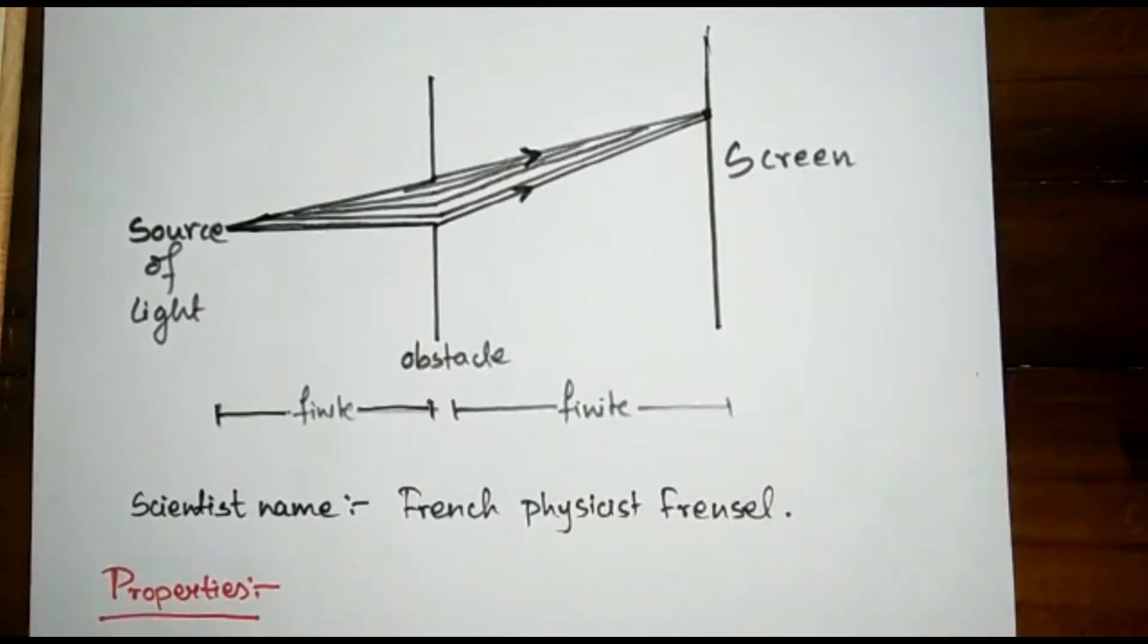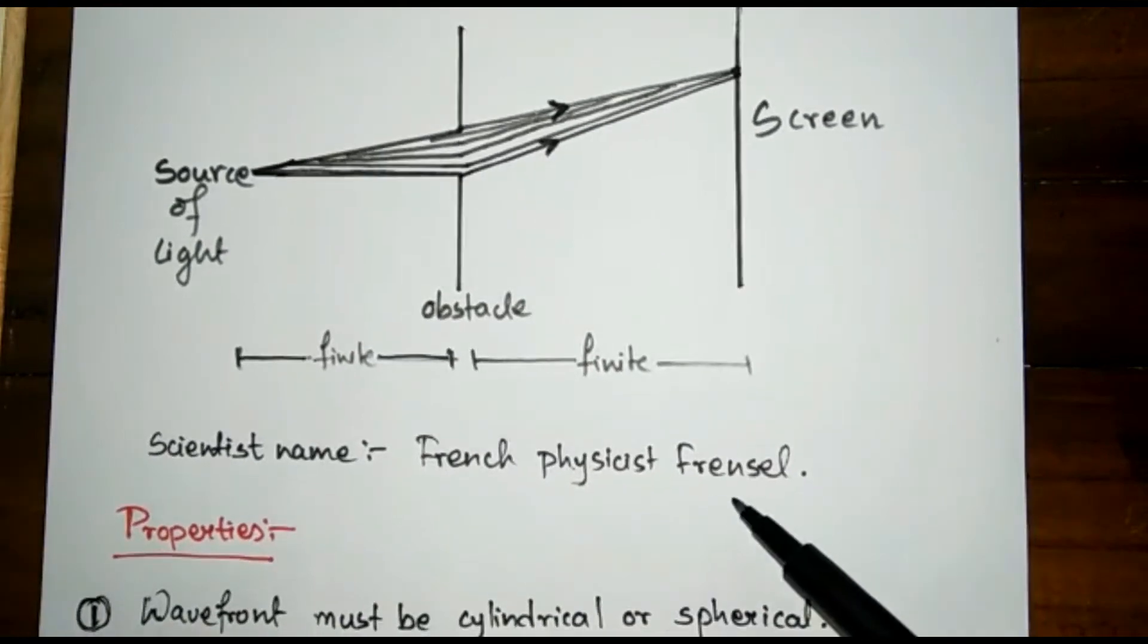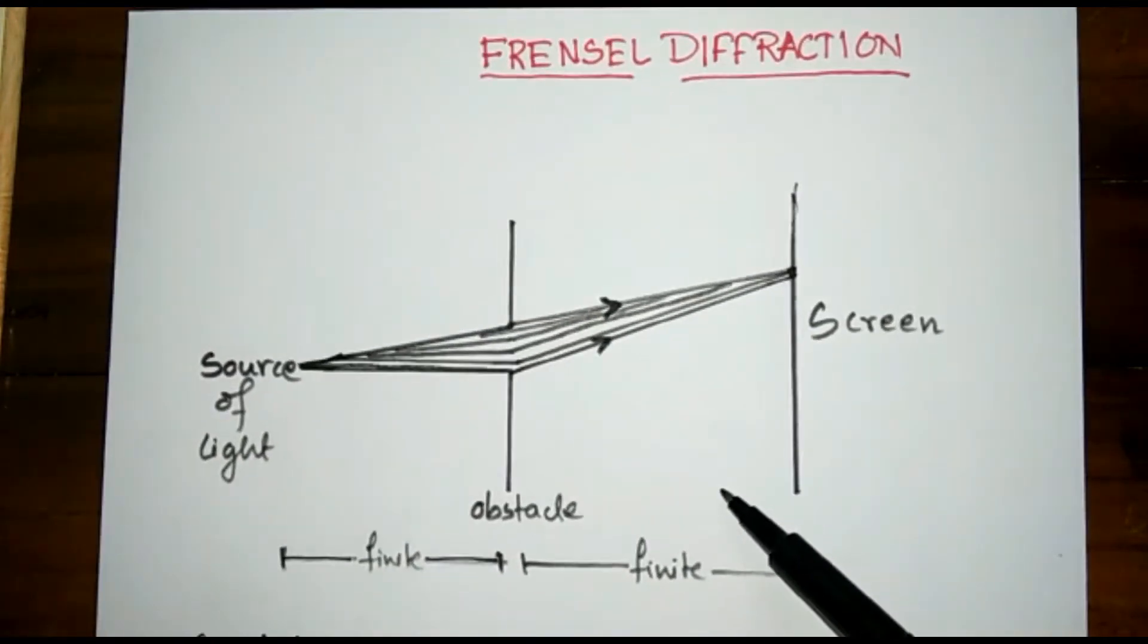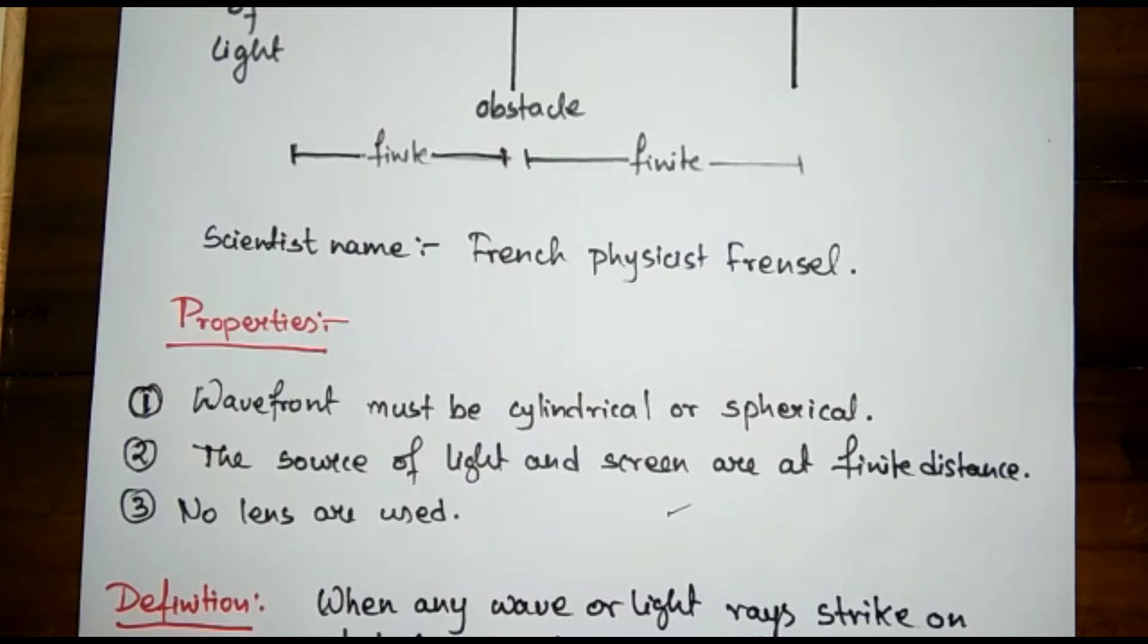The scientist who performed this experiment first was the French physicist named Frenel, and that is why this phenomenon is known as Frenel diffraction.